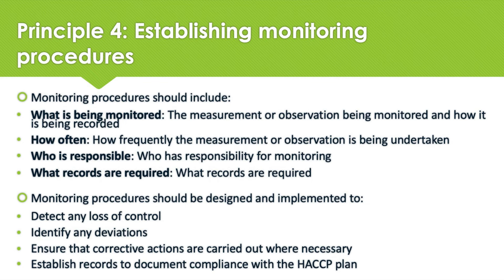Principle four is to create a system to keep an eye on CCP control. In order to determine whether a CCP is under control and to create an accurate record for usage and verification in the future, monitoring is a planned series of observations or measurements. How will you measure it? Is it possible to continuously monitor the control point? If not, how frequently must the measurements be made to demonstrate that the process is under control? The efficiency of a program depends on the monitoring that occurs at the crucial control points. The monitoring program will consist of physical measurements or observations that can be made in a timely manner to provide information in a time frame that allows you to take action and control product if an out-of-control situation occurs.